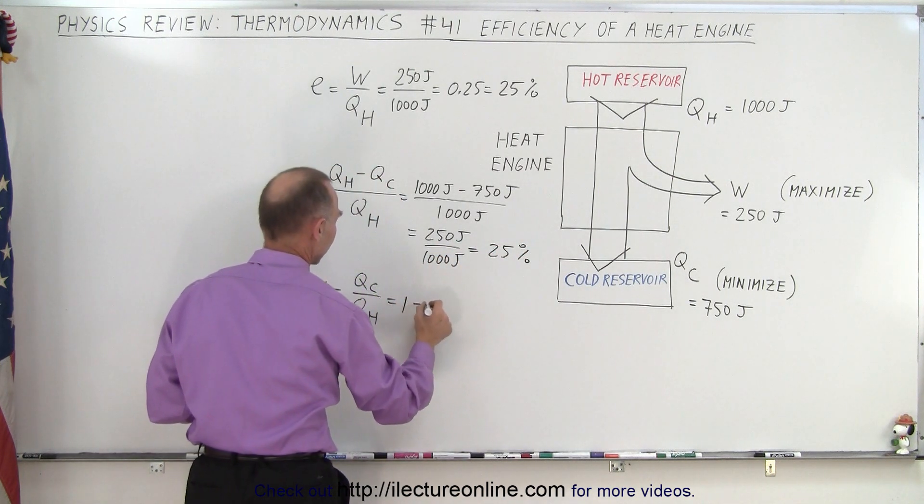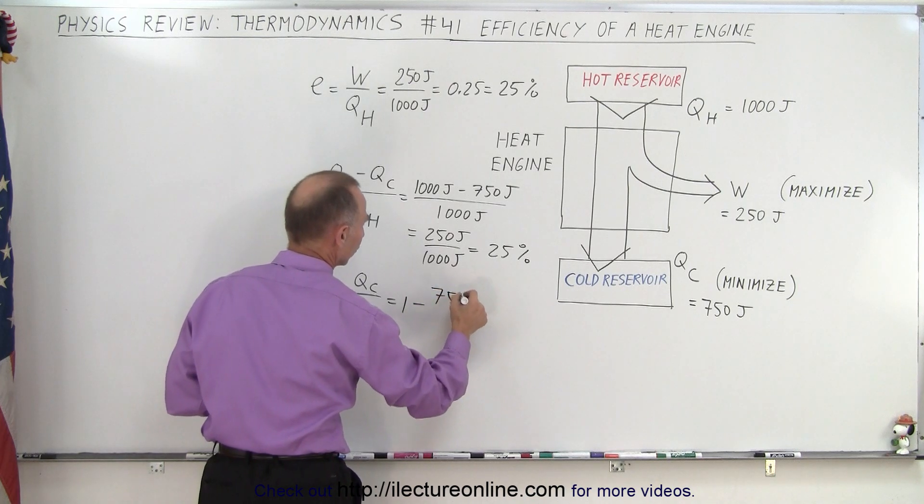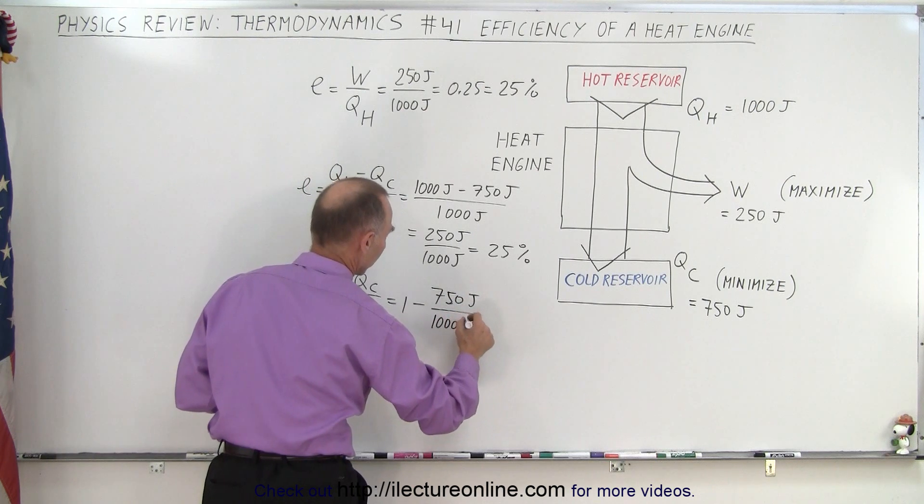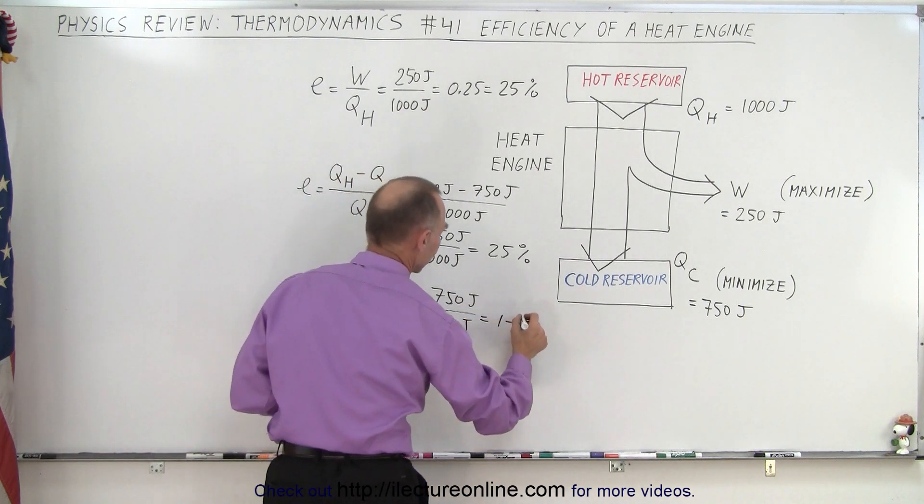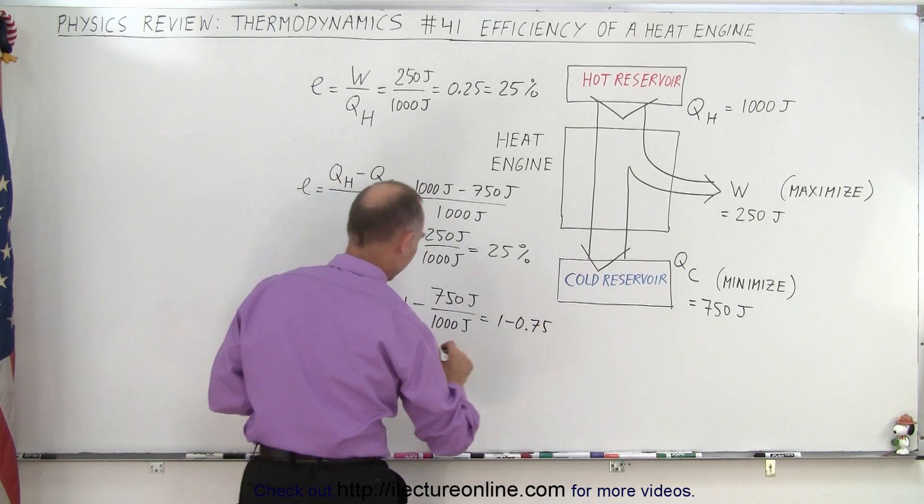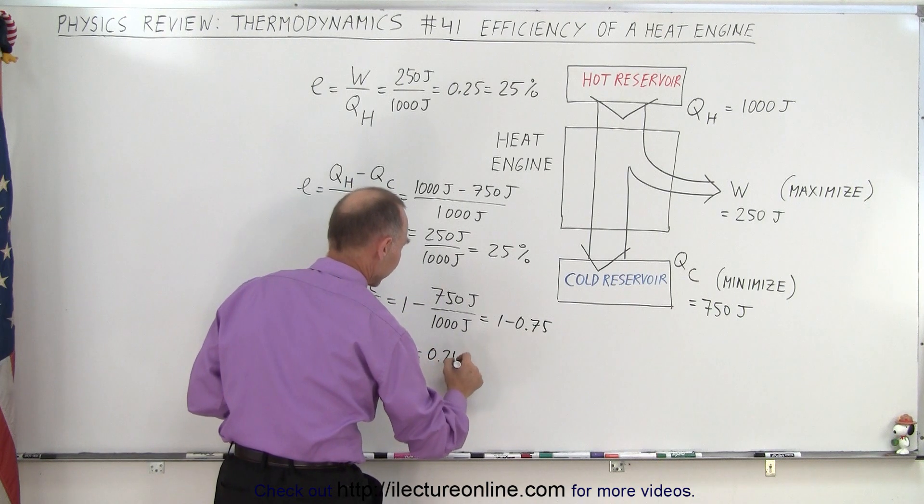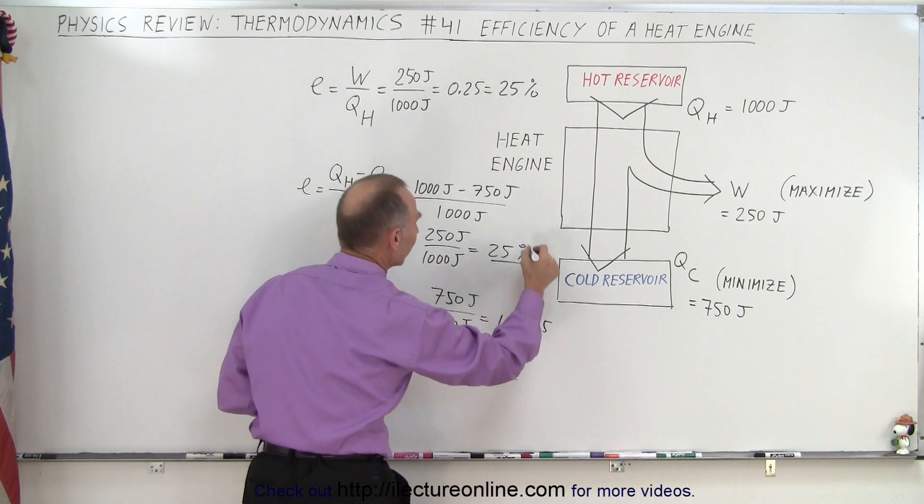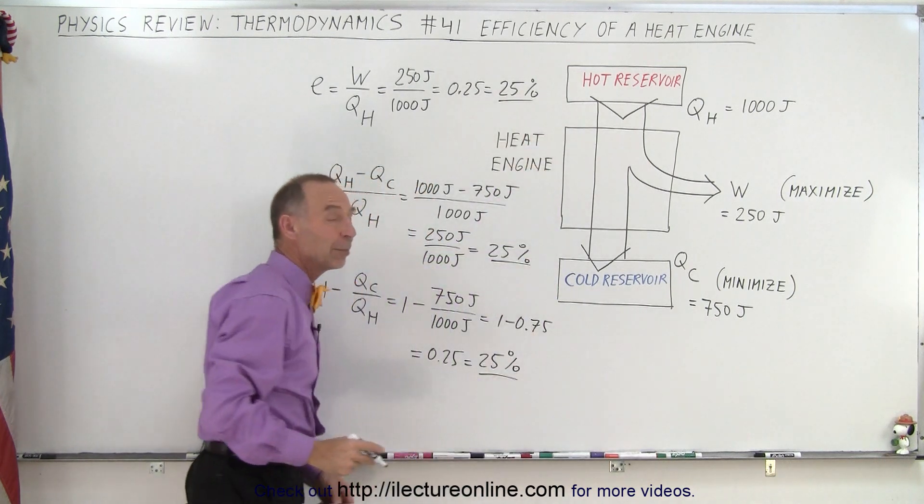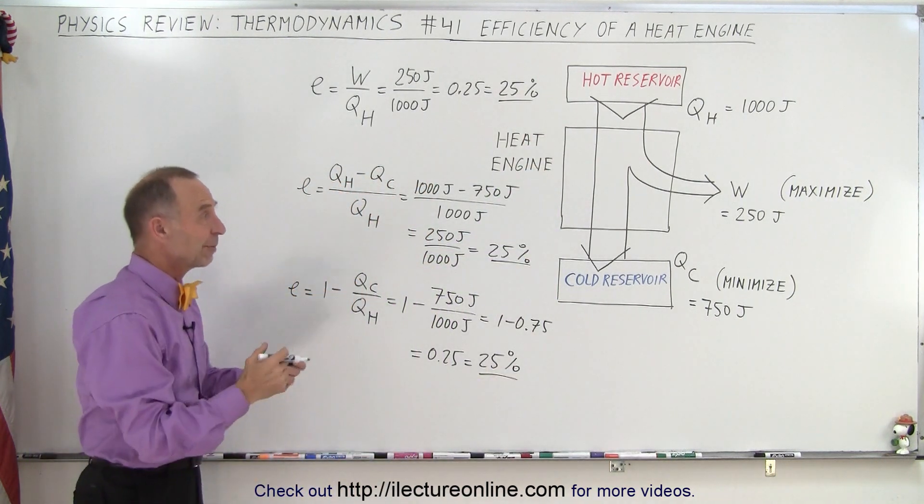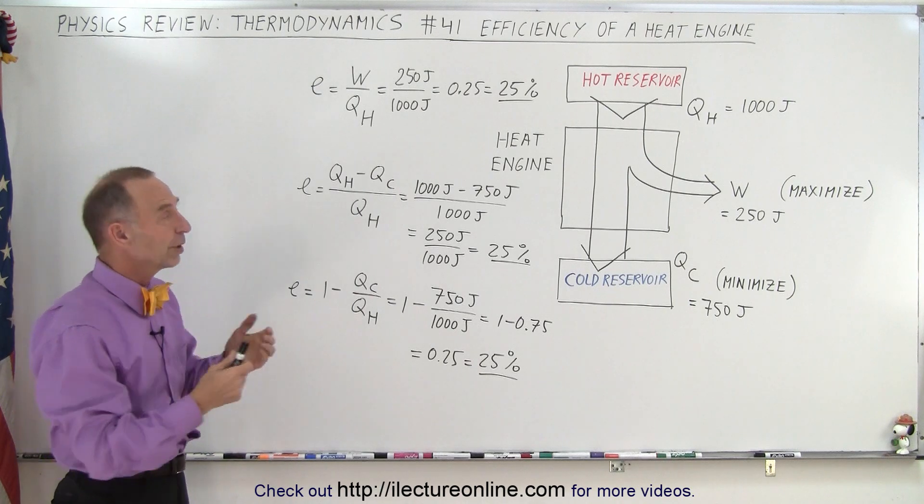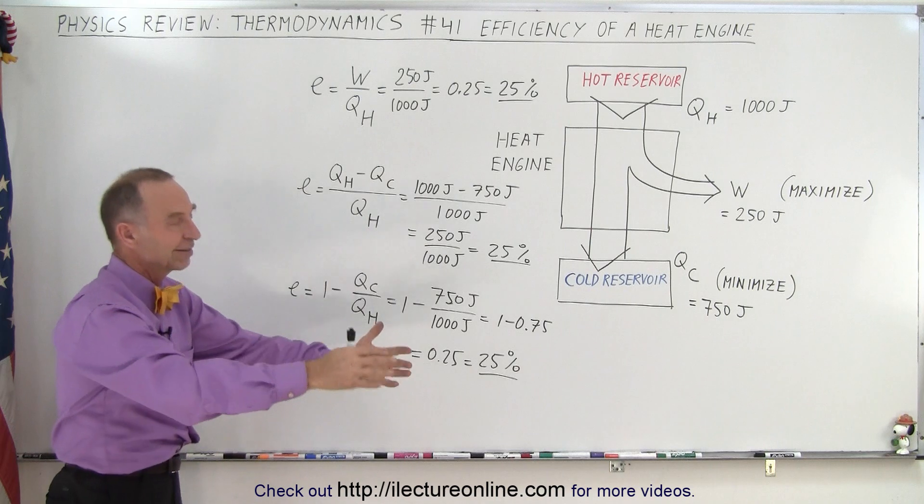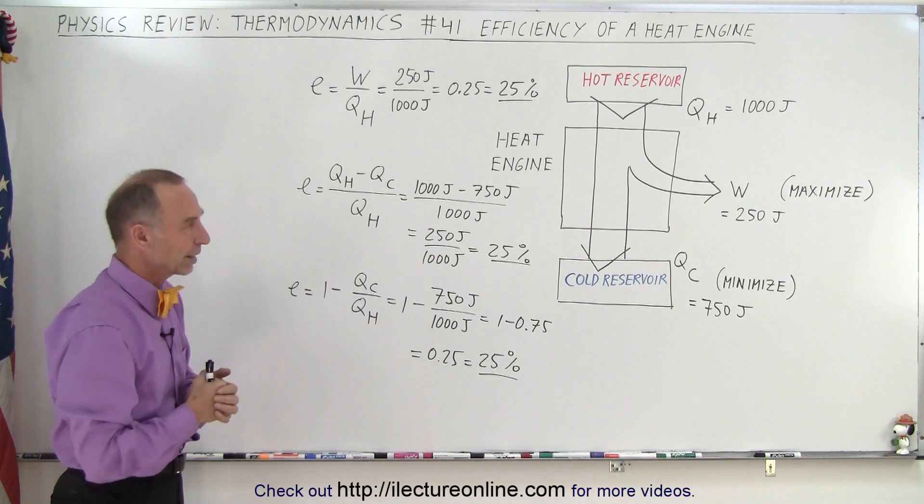And here we can write this as 1 minus Q-cold, which is 750 joules divided by 1,000 joules, which is equal to 1 minus 0.75, which is equal to 0.25, which is equal to 25%. So in each case, you can see that in this example, the efficiency is 25%, which means we utilize 25% of the heat that comes in from the hot reservoir and then we waste 75% of the heat coming in that we cannot utilize.